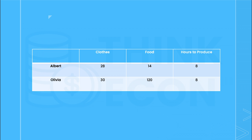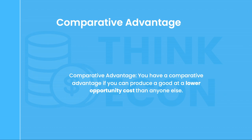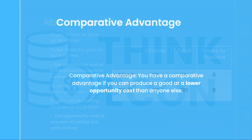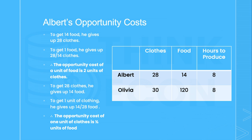But what about comparative advantage? How do we calculate that? You have a comparative advantage if you can produce at a lower opportunity cost than anyone else. Opportunity cost is simply what you give up in order to obtain something else. So let's calculate the opportunity cost for Albert and Olivia. For Albert, to get 14 units of food, he must give up 28 units of clothes. Therefore, by dividing both sides by 14, I know that to get one unit of food, he must give up 28 over 14, or two units of clothes. So for Albert, one unit of food has an opportunity cost of two units of clothes.